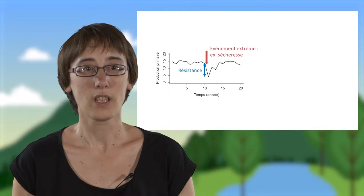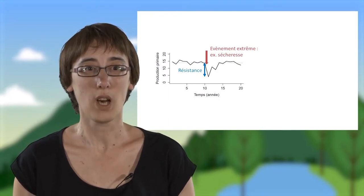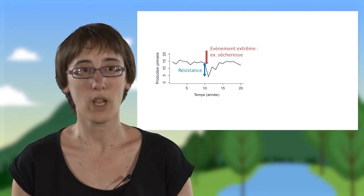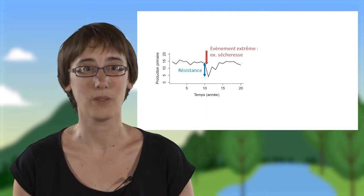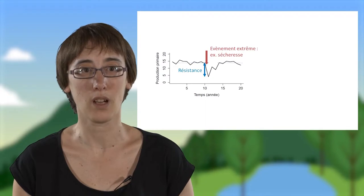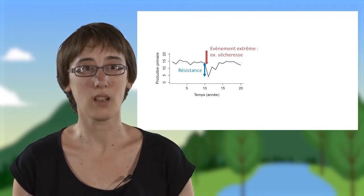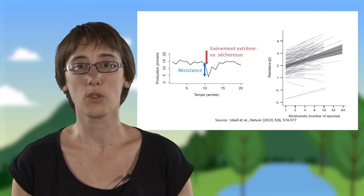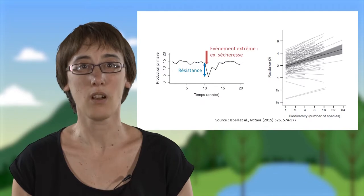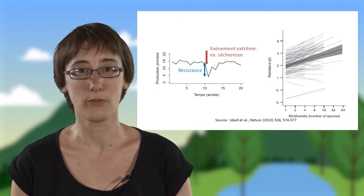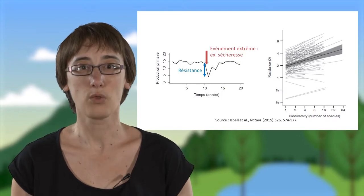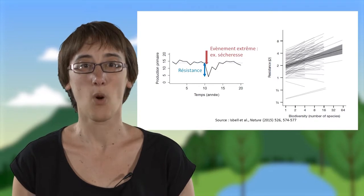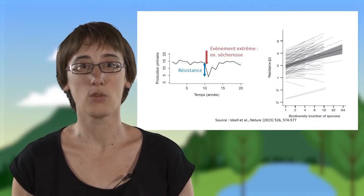La diversité des plantes affecte également d'autres aspects de la stabilité, et notamment la résistance à des événements climatiques exceptionnels. Dans l'exemple schématisé ci-dessous, vous pouvez voir qu'en réponse à une sécheresse inhabituelle, la production primaire diminue fortement une année donnée. La résistance mesure à quel point la production primaire en réponse à la sécheresse diffère de la production primaire des années moyennes. Le graphique présenté montre la relation entre la diversité des plantes et la résistance de la production primaire face à des sécheresses ou à des fortes précipitations inhabituelles, pour de nombreuses expériences manipulant la diversité des plantes. On peut voir que la résistance augmente avec la diversité, de façon générale.